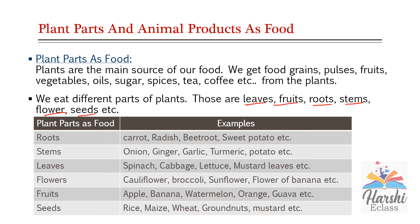Roots — examples are carrot, radish, beetroot, and sweet potato. Stems — examples are onion, ginger, garlic, turmeric, and potato. Leaves — we use some leaves as food items: spinach, cabbage, lettuce, and mustard leaves.